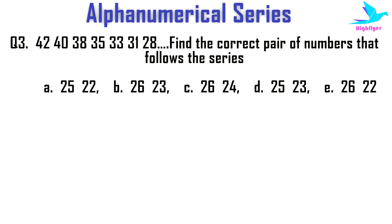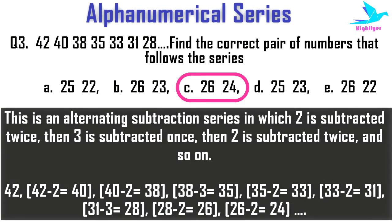Next example: 42, 40, 38, 35, 33, 31, 28 — find the correct pair of numbers that follows the series. The options are: A) 25, 22; B) 26, 26; C) 26, 24; D) 25, 23; E) 26, 22. The right option is C: 26, 24. This given series is an alternating subtraction series in which 2 is subtracted twice, then 3 subtracted once, then 2 is subtracted twice, and again 3 subtracted once, and so on. So: 42 − 2 = 40, 40 − 2 = 38.